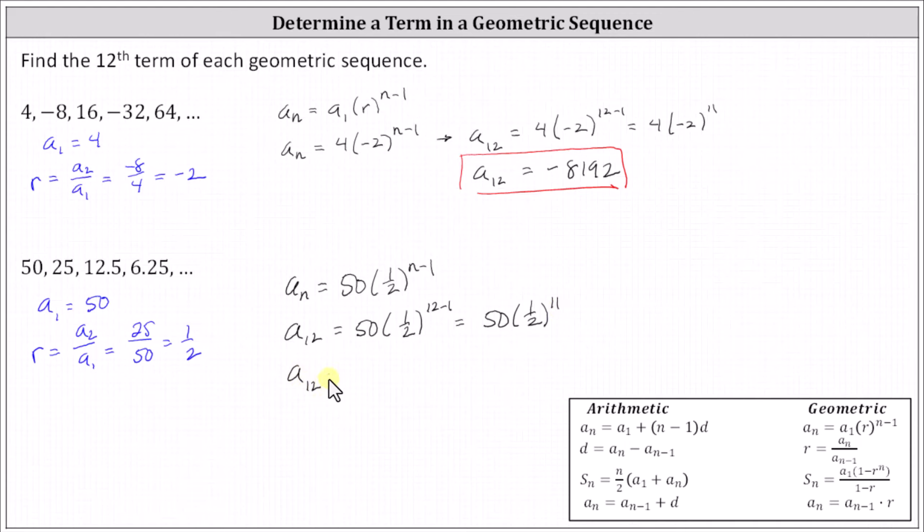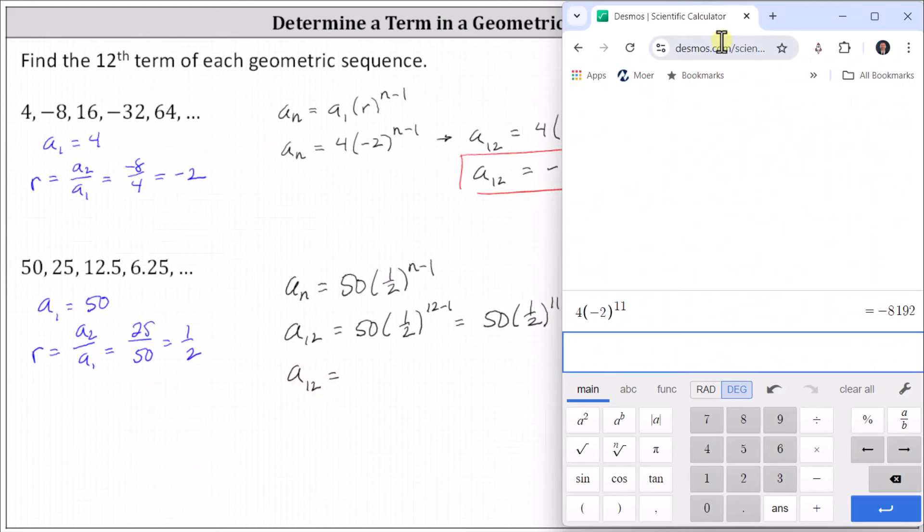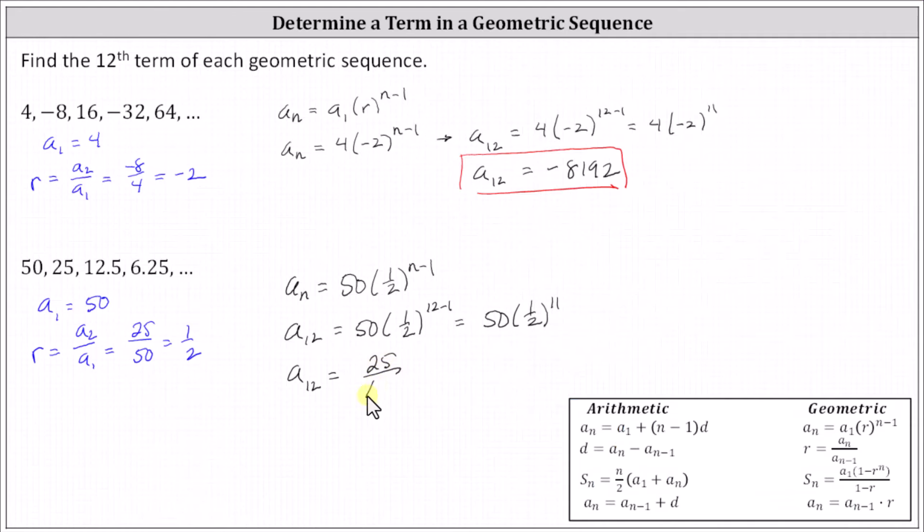Again, now we go back to the calculator. We enter 50, open parenthesis, one divided by two, right arrow, close parenthesis, raised to the power of 11. Enter. We don't want to give a decimal approximation. We want the exact value of the twelfth term, so we click on the convert to fraction button on the far right and give the 12th term as 25 divided by 1024. I hope you found this helpful.